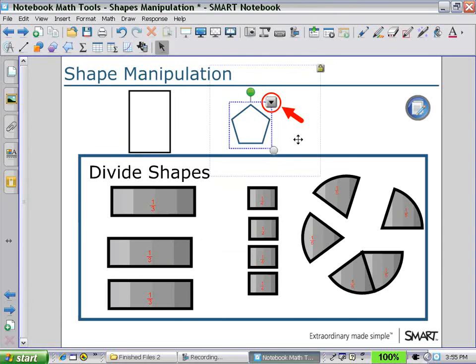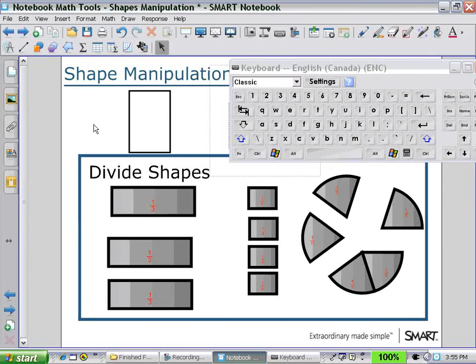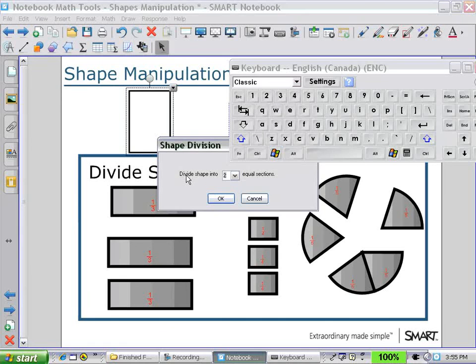And then divide this rectangle into a number of pieces, so using our shape division. Before we do that, I should probably open up my keyboard. Okay, again, selecting my shape, selecting for shape division. And this time, notice that it has 12 sections that can be divided into.